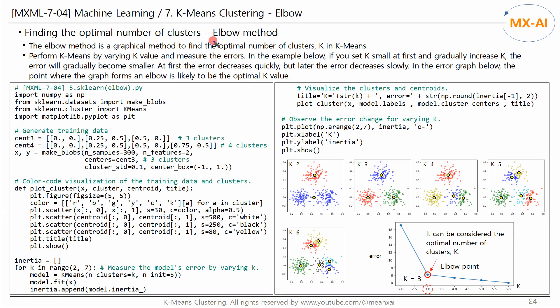First, let's look at the elbow method. It's very simple. The elbow method is a graphical method to find the optimal number of clusters, k. Perform k-means by varying the k value and measure the errors. If you set k small at first and gradually increase k, the error will gradually become smaller.